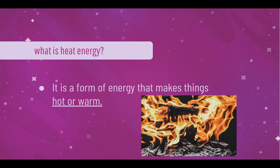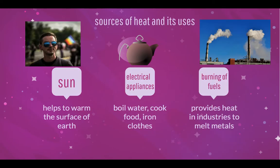Heat energy is the form of energy that makes things hot or warm. Here are some sources of heat and its uses. The sun produces heat which helps us to warm the surface of earth. Electrical appliances supply heat with the use of electrical energy, which can be used to boil water, cook food and iron clothes. The burning of fuels also emits heat, which is often used in industries to melt metals.